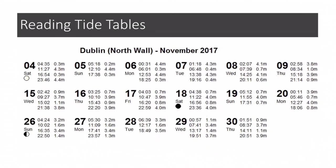Looking at the tide tables here, we see it's for a specific place — this one is Dublin Northwall — and also a specific date, shown as November 2017. We're going to look at the 4th of November, the Saturday. On that day we can see at 11:27 we have a height of 4.3 metres, and then at 16:54 we have a height of 0.3 metres.